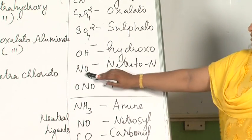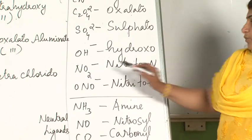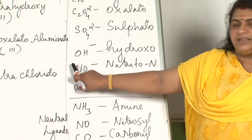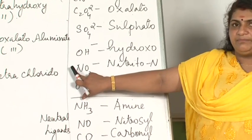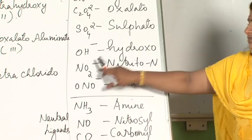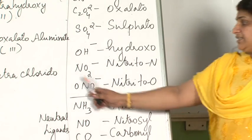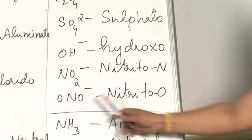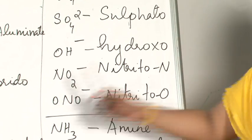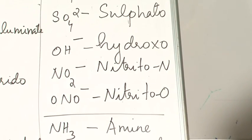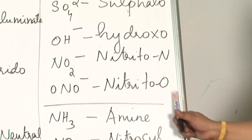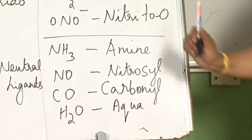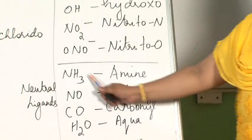Hydroxonitrito-N: this is nitrito because it is an ambidentate ligand — it can coordinate from nitrogen as well as oxygen. If it coordinates through nitrogen, I write it as nitrito-N; if through oxygen, I write it as nitrito-O. Hope you understood these names. You should know about all the negative ligands.